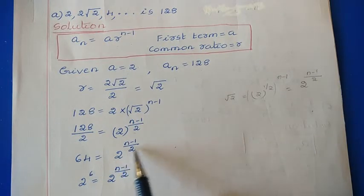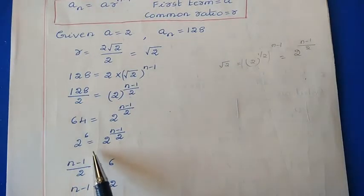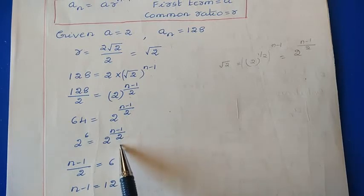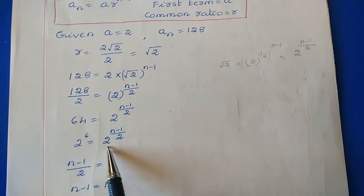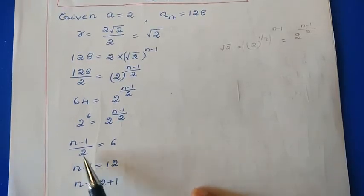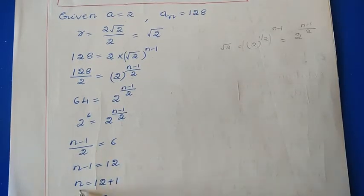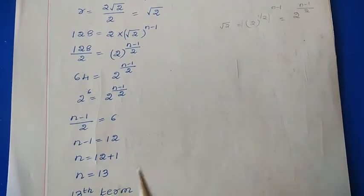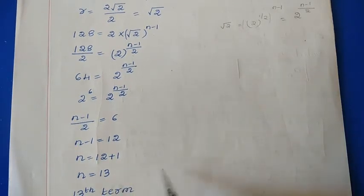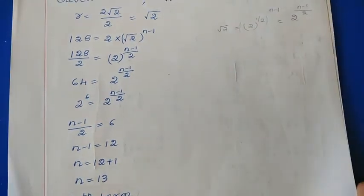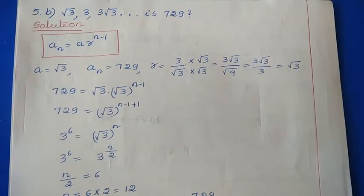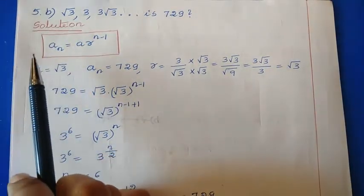We can write 64 as 2^6, so 2^6 = 2^((n-1)/2). Since the base values are the same, we equalize the powers: (n-1)/2 = 6, so n-1 = 12, therefore n = 13. So a₁₃ = 128, meaning the 13th term is 128. Next, for Question 5b, we again need to find the n value.